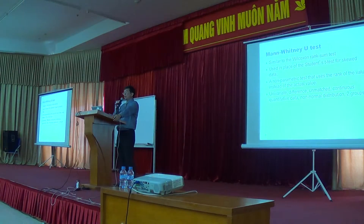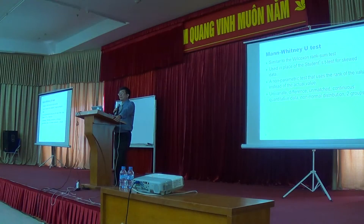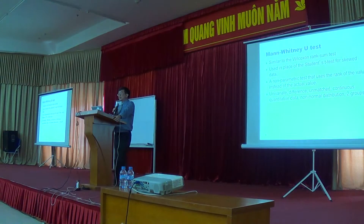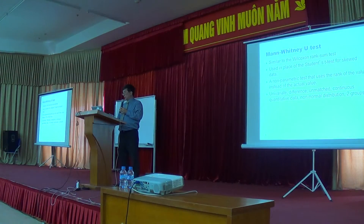The Mann-Whitney U test is similar to the Wilcoxon rank sum test. It is used in place of the Student's T-test for skewed data. It is a non-parametric test that uses the rank of the value instead of the actual value. It is univariate, compares differences, the samples are unmatched, and it uses continuous quantitative data. It does not assume a normal distribution and compares two groups.